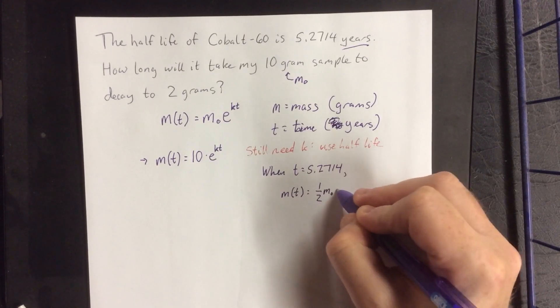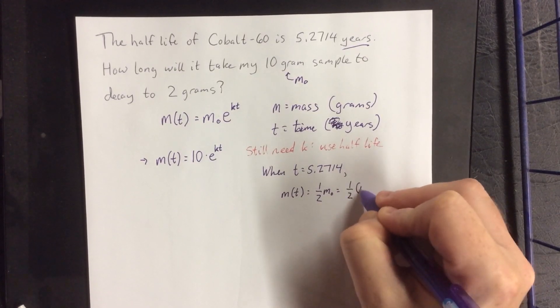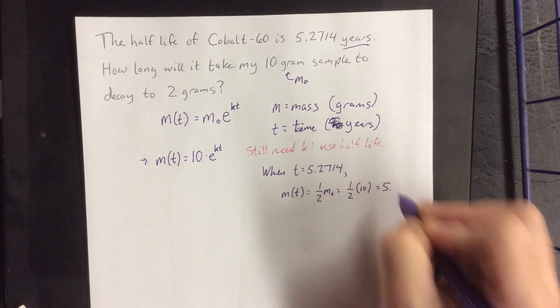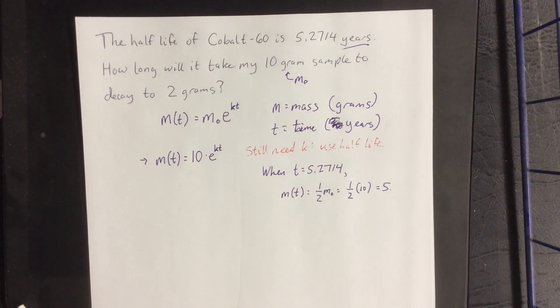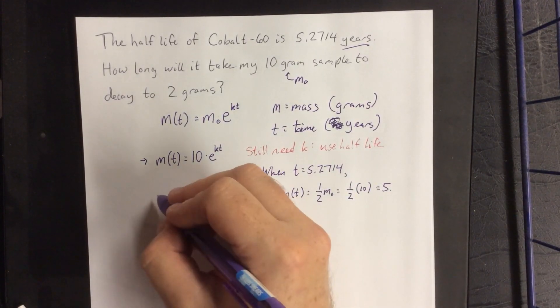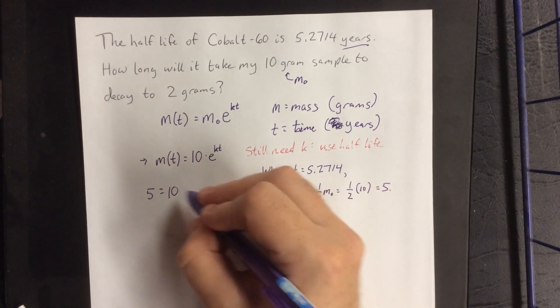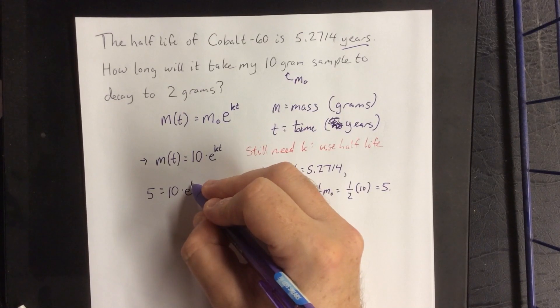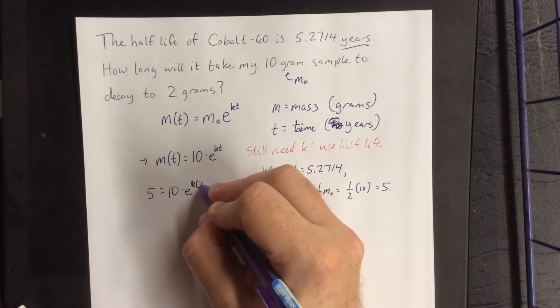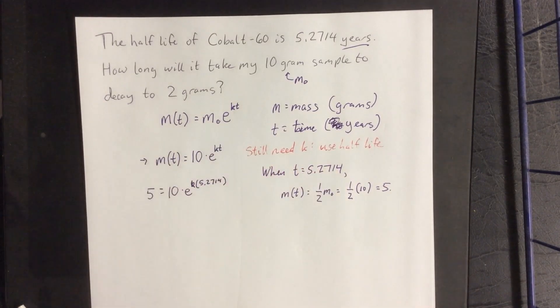the mass has decayed to half of its original amount. So given that it's half of the original amount, half of 10 would be 5. So what we're going to do is plug in these two values and then solve for k, k times 5.2714.